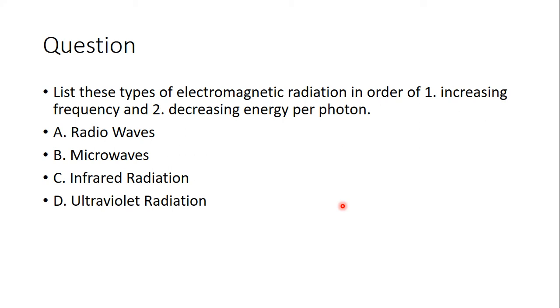Here's a question for you about waves, electromagnetic radiation more specifically. So I have four different types of radiation for you. I want you to, one, list them from increasing frequency. So high frequency at the top, low frequency at the bottom. And I also want you to list them from decreasing energy. So high energy at the top, low energy at the bottom. Pause the video and see if you can do that.